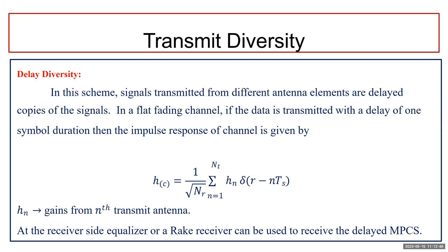The impulse response of the channel is given by h_c(τ) = (1/√N_T) × Σ(n=1 to N_T) h_n · δ(τ − n·T_s), where h_n represents the gains from the nth transmit antenna to the receiving antenna. The impulse response is normalized so that the total transmit power is independent of the number of antenna elements. The signals from different transmit antennas act effectively as delayed multipath components at the receiver.